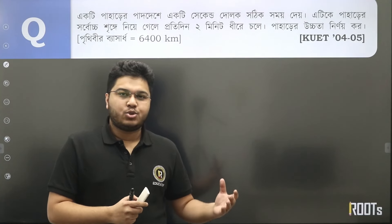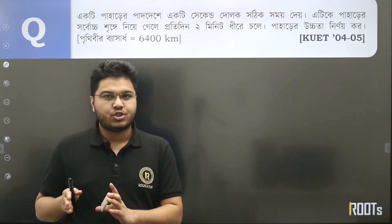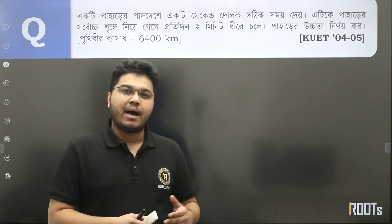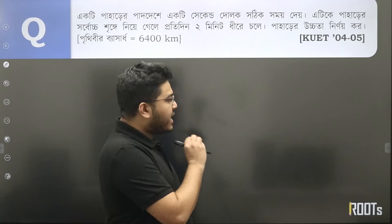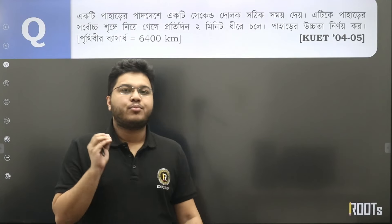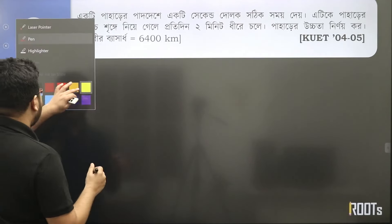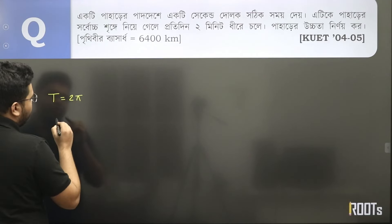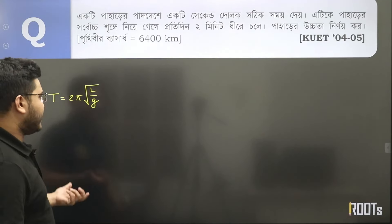কিছু সেকেন্ড হচ্ছে সে ধীরে চলে বা কোনো কোনো ক্ষেত্রে কিছু সেকেন্ড সে ফাস্ট চলে অথবা এটাকে মাঝেমধ্যে বলা হয় যে ঘড়িটা সে ঘড়িটা হচ্ছে সময় লাপ করে বা সময় হারায়। তো এই জিনিসগুলা কীভাবে তোমরা খুব ইজিলি বুঝতে পারো এবং সেখান থেকে তোমরা ফর্মুলা দিয়ে প্রায় প্রায় প্রমাণ করতে পারো — কোনো এটা সরল।